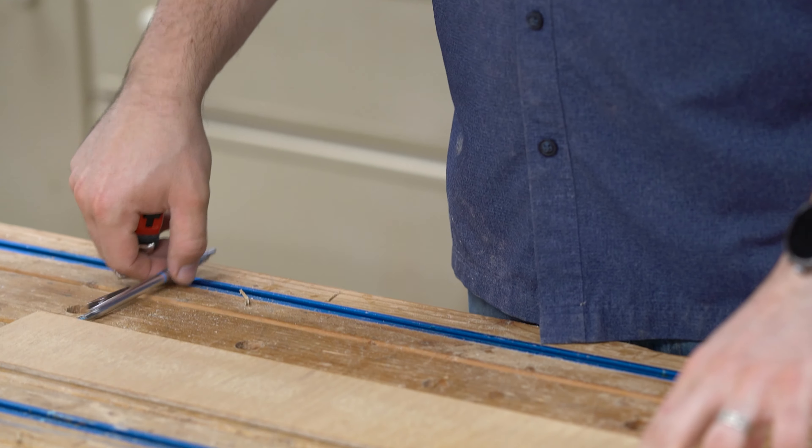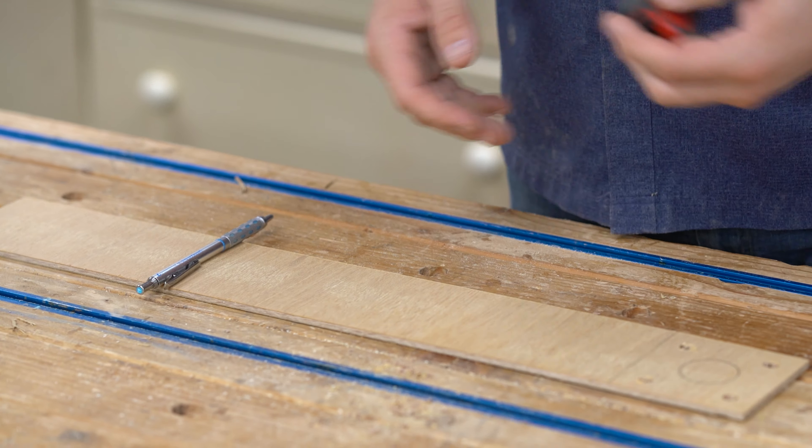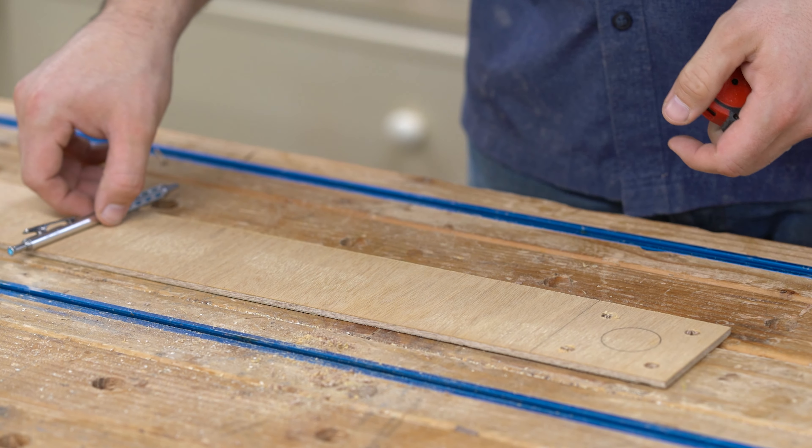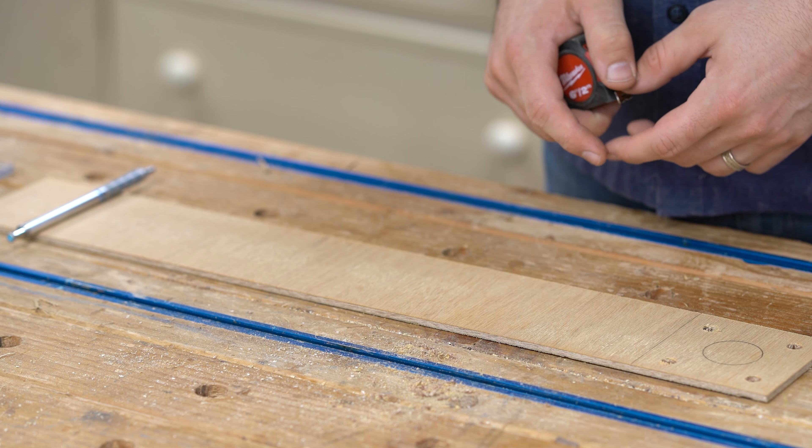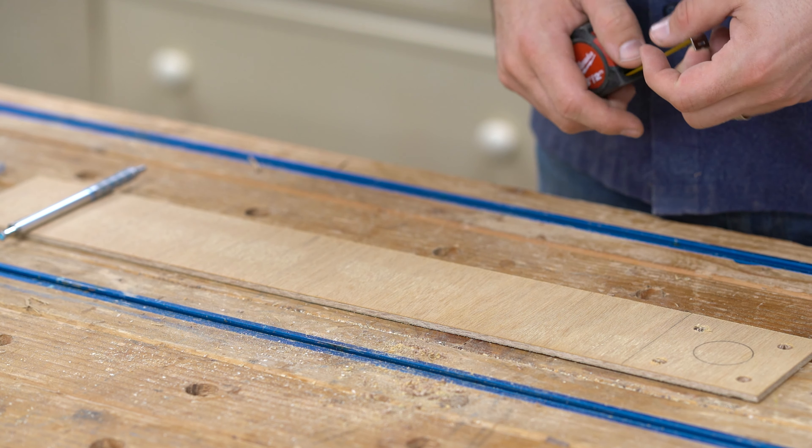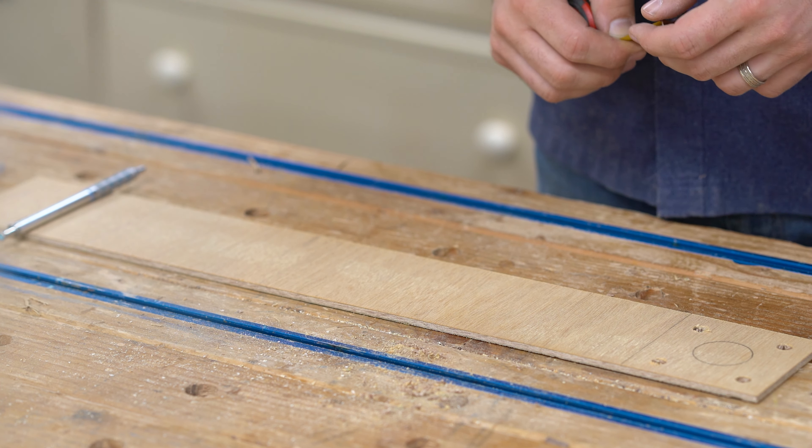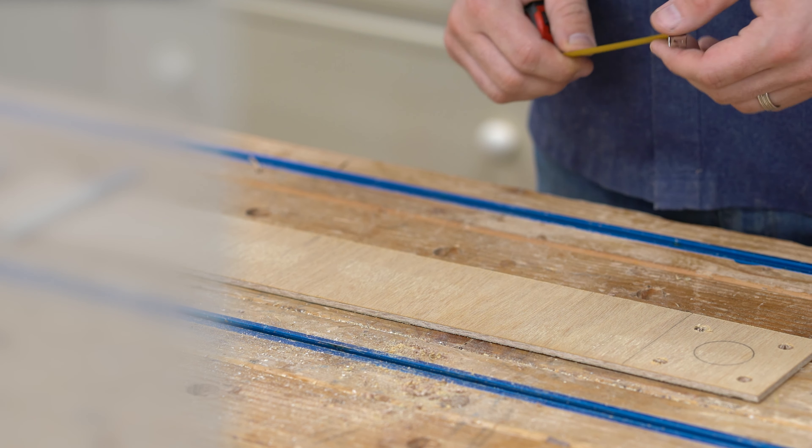Now this is where the math comes in. I want to cut a disc that is 12 inches across. If you remember your high school geometry, the distance across the circle is called the diameter, and half the diameter is called the radius. Radius is the number we need to know right now. In our case, the diameter is 12 inches, which means that the radius is 6 inches.